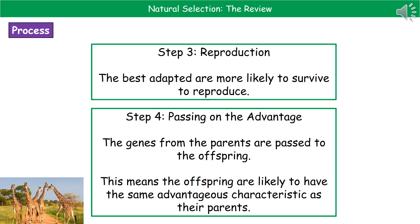For those organisms that have actually managed to survive, that means they're going to reproduce. The best adapted are more likely to survive to the age of reproduction, and when they reproduce, they pass their genes onto their offspring. That means the offspring are likely to have the same advantageous characteristic as their parents.